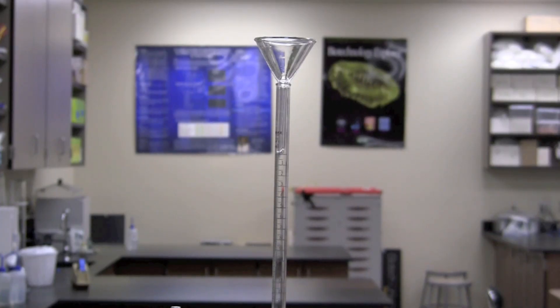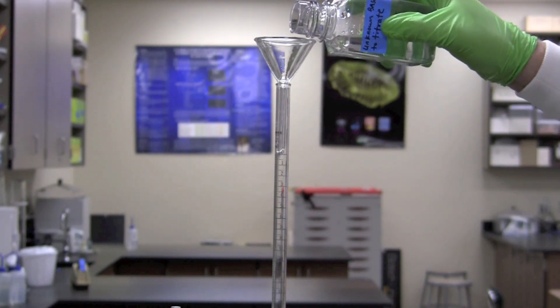Using a funnel or pipette, fill the burette with the base of unknown concentration. In this case we are using a sodium hydroxide solution. The final amounts can be added drop by drop using a pipette. Read and record the volume of sodium hydroxide in the burette by reading the bottom of the meniscus.